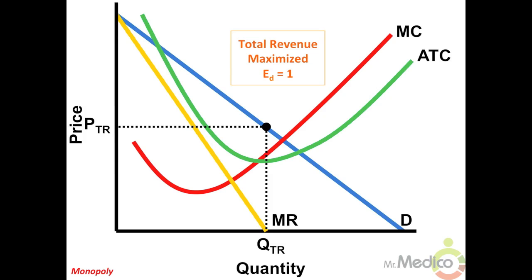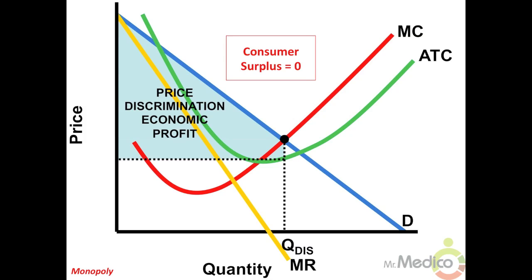Price discrimination: if a monopolist practiced perfect price discrimination, profits would increase drastically as the area of consumer surplus would be eliminated. Each consumer would pay the highest price that he or she is willing to pay. The former consumer surplus becomes part of the economic profit, but society will get a more socially efficient level of output because MC would equal D.